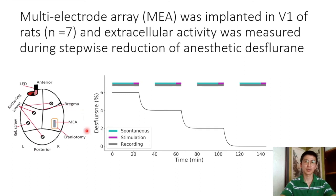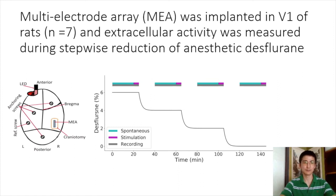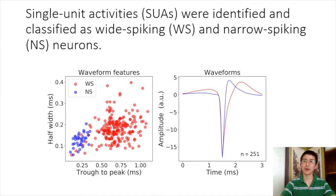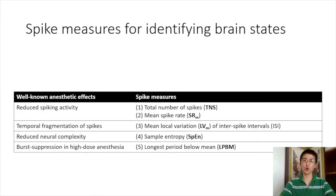This study will help us better understand the neuronal basis of anesthetic-induced unconsciousness and help interpret neuroscientific data obtained under anesthetized conditions. In the experiment, we implanted a multi-electrode array on the right primary visual cortex to record spike activity. We also gave light flashes as visual stimulation. We used anesthetic gas and decreased its concentration in a stepwise manner — gray represents recording time, cyan is the spontaneous session, and magenta is the stimulation session. Today I will focus on spontaneous activity data only.